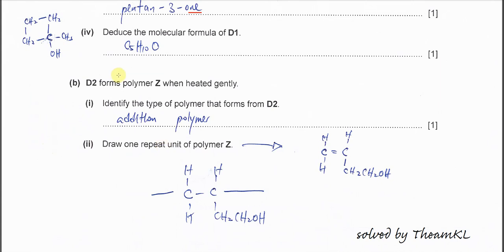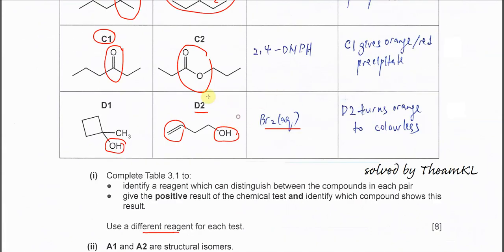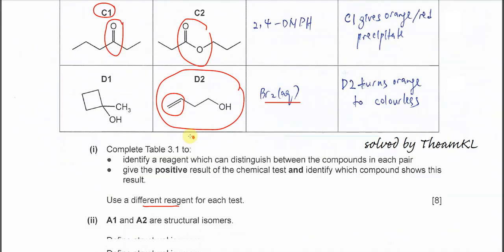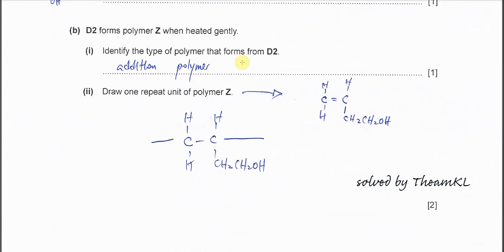D2 forms polymer Z when heated gently. D2 has C=C double bond and OH, so we're going to focus on this part because this part is going to form the polymer main chain. Identify the type of polymer formed from D2. Because it's C=C double bond, it forms polymer, it must be addition polymer.